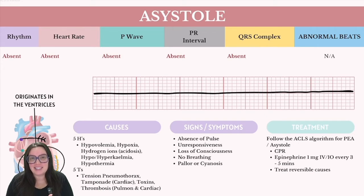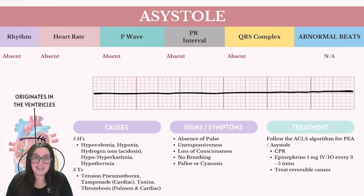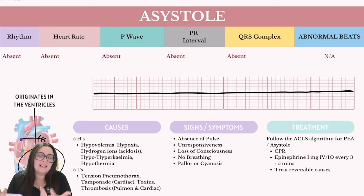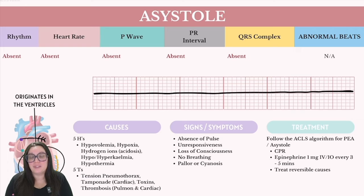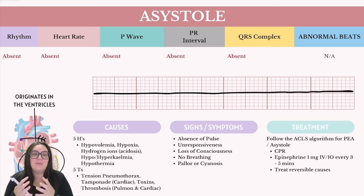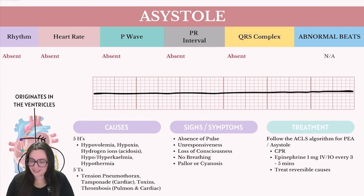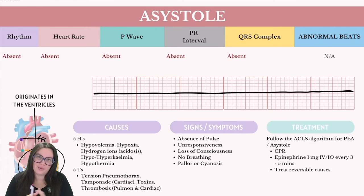Signs and symptoms of this most lethal rhythm include absence of a pulse, the person being unresponsive and losing consciousness, no breathing, and pallor or cyanosis — meaning the person will be very pale or turn blue. When it comes to treatment, we follow the ACLS algorithm for PEA and asystole. The biggest difference is we're not going to be defibrillating because there is nothing to defibrillate in these cases.